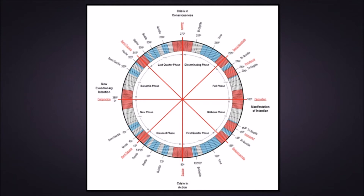You would take your slowest moving planet and put it at zero, then take your fastest moving planet and mathematically calculate the degrees of separation. If Neptune's here and Jupiter is exactly 90 degrees — 90 clicks — away from Neptune, by understanding that phase relationship you would see it's a crisis in action square. And this is what I love about it — in EA there are two types of squares.